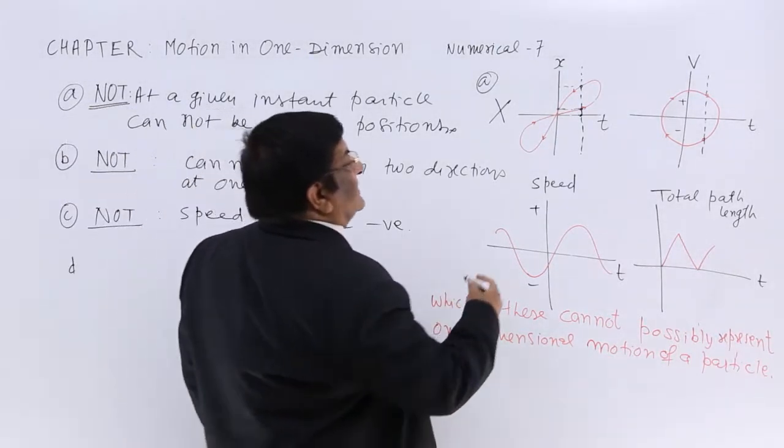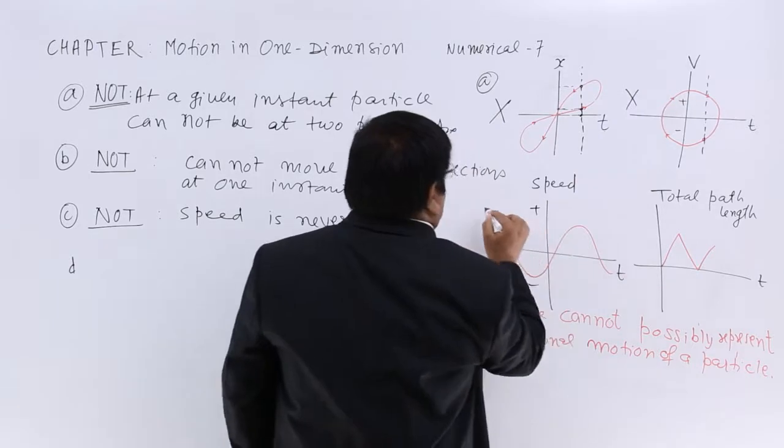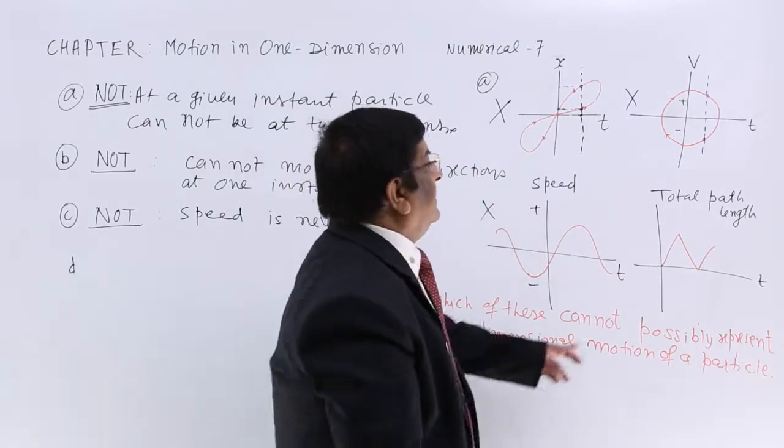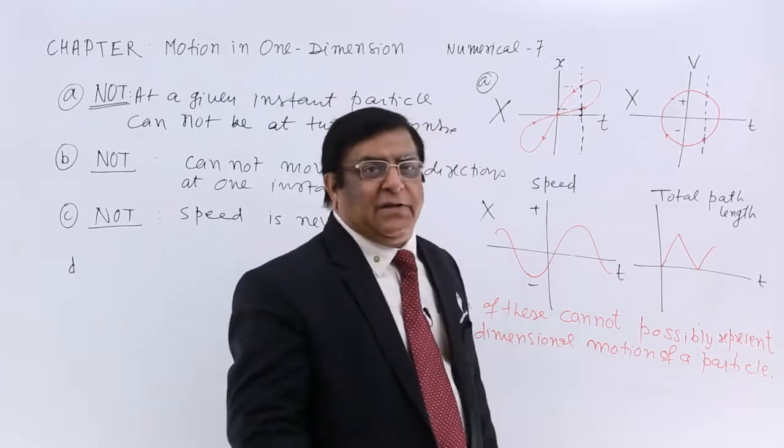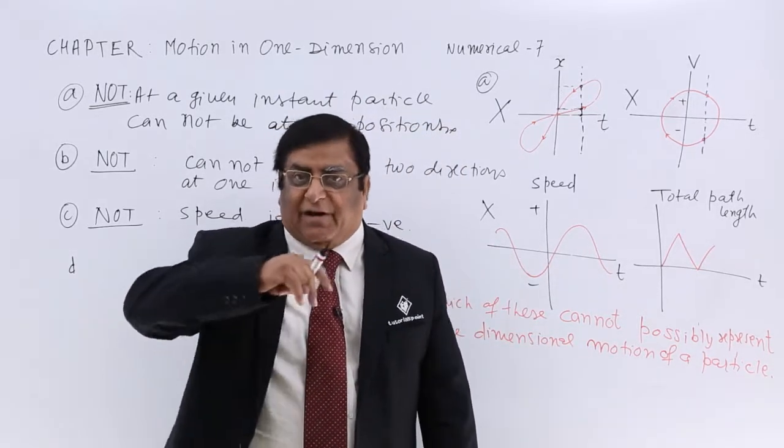So this is not correct, this is not correct, this is not correct. Now, total path length and time. The total path length, path length which I travel.